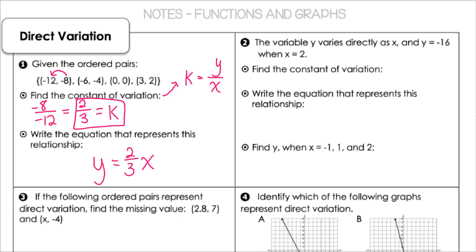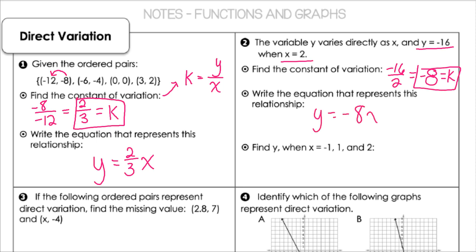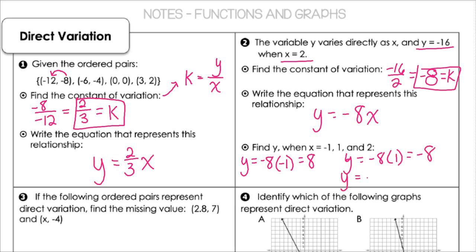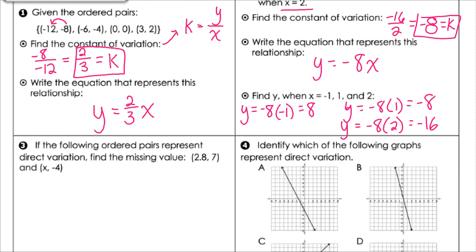In number two, the variable y varies directly as x, and we're given y equals negative 16 and x equals 2. Finding the constant: y divided by x gives me negative 8 for k. So the equation is y equals negative 8x. We can then plug in values: negative 8 times negative 1 gives positive 8, negative 8 times 1 gives negative 8, and negative 8 times 2 gives negative 16.